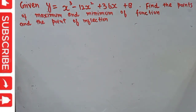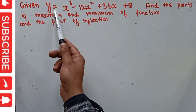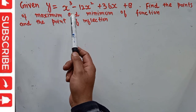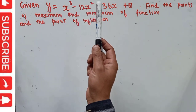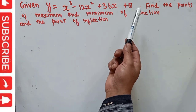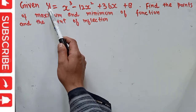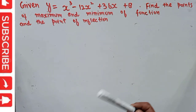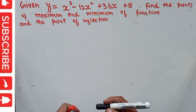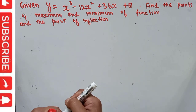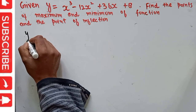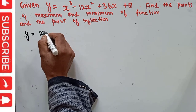In this video we will solve a problem on how to find the points of maximum and minimum of a function and the point of inflection. The question is: given a function y = x³ - 12x² + 36x + 8, we are supposed to find out the points of maximum and minimum of this function and the point of inflection.